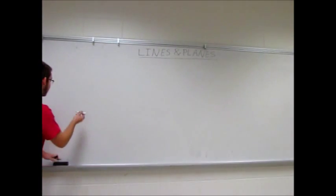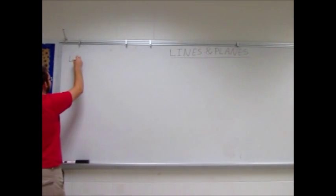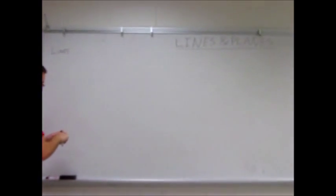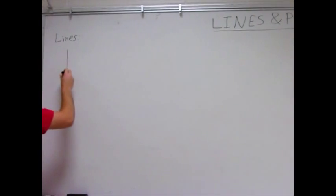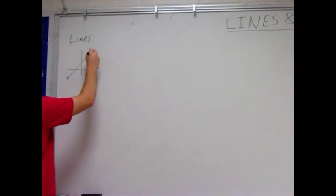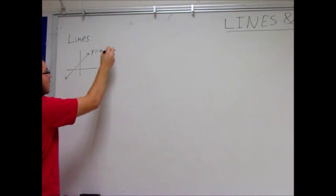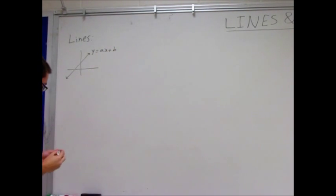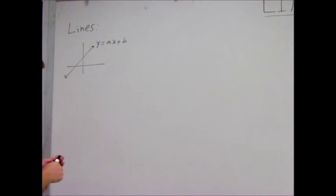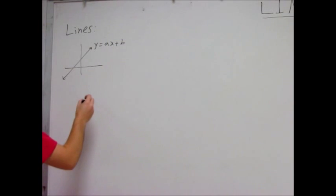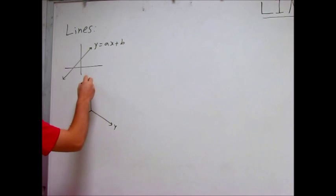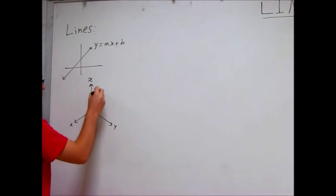The first thing we're going to talk about is lines, how we describe a line in three dimensions. In two dimensions, a line is described by something like y equals x plus b, a similar equation. But in three dimensions we have to have a little more information because we have x, y, and z axes. So the first way we're going to describe a line, it will start with our initial point, called x0, y0, z0.